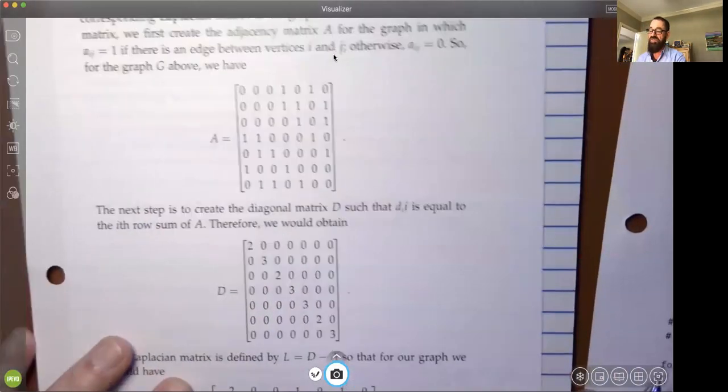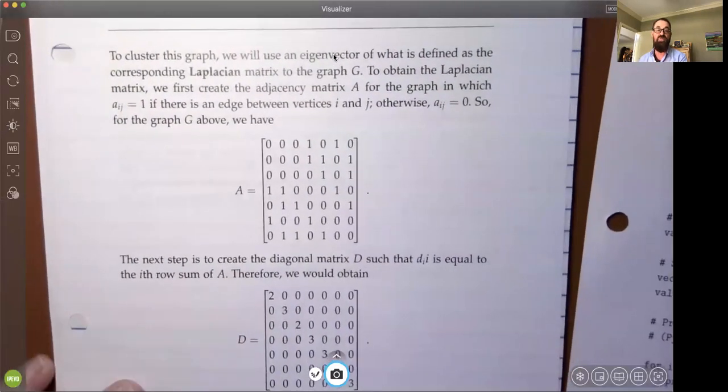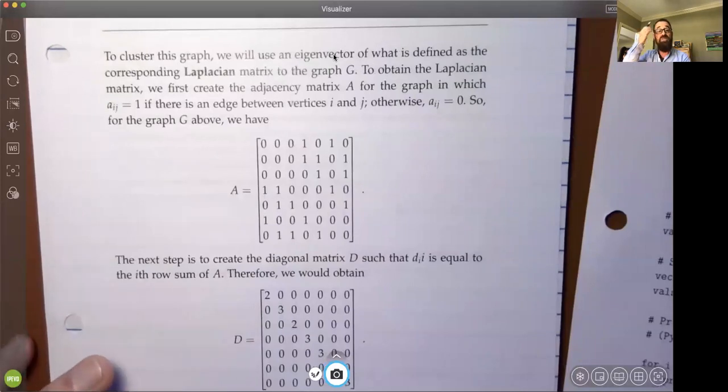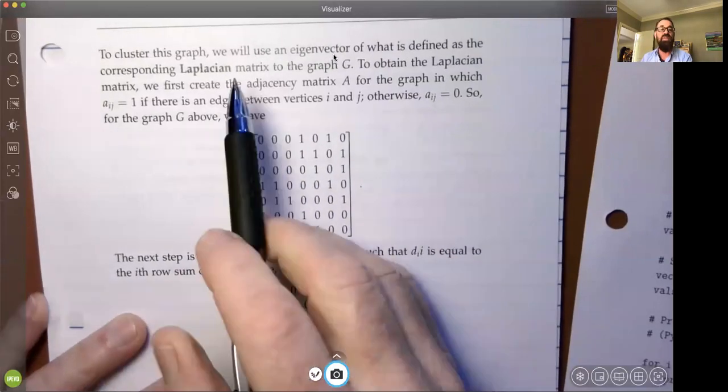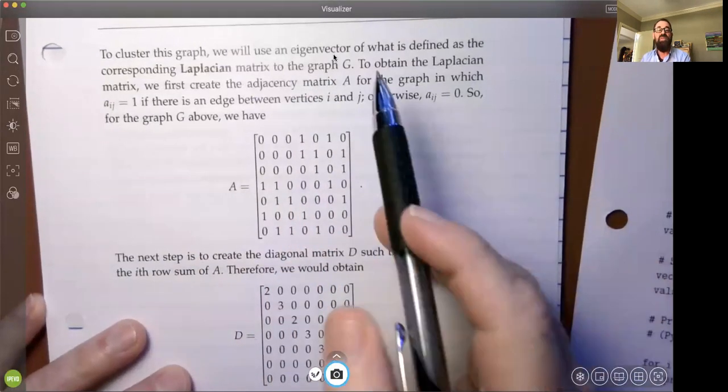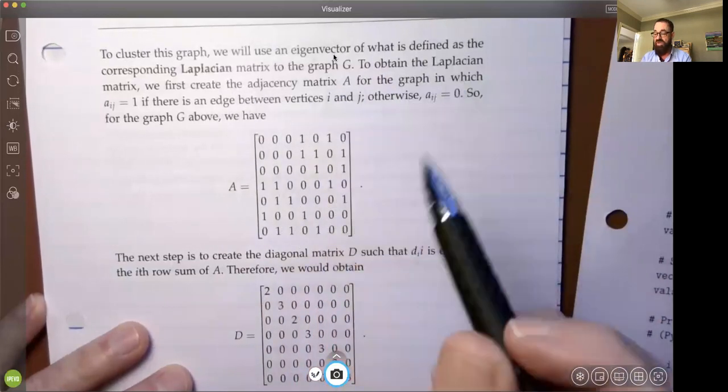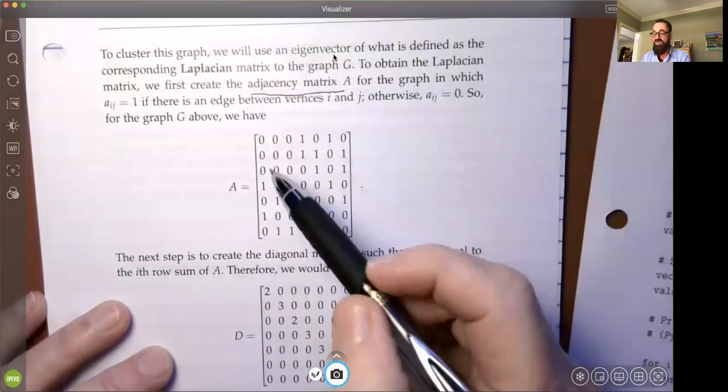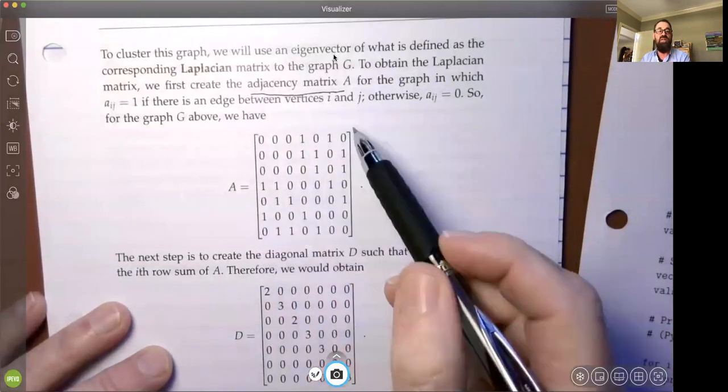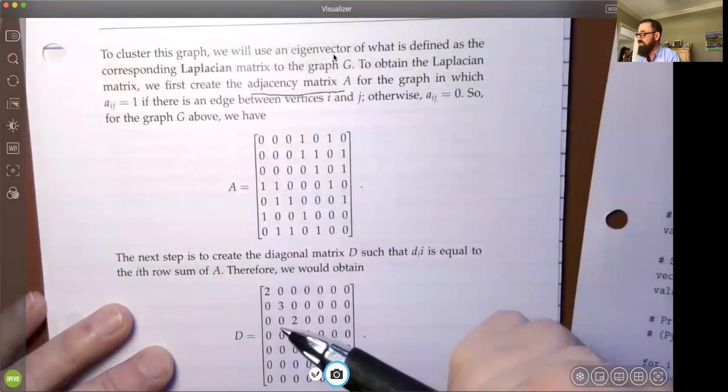The technique we're using is based on what's called the Laplacian matrix. To cluster this graph, to illustrate how many clusters are represented by that data, you use eigenvectors, which was covered in Math 251. We use the eigenvector of a special matrix called the Laplacian matrix that's associated with the graph G. To obtain the Laplacian, first you need the adjacency matrix. This is a binary matrix for an undirected graph where you indicate the vertices going down rows and columns, then you put edges in where they're appropriate.